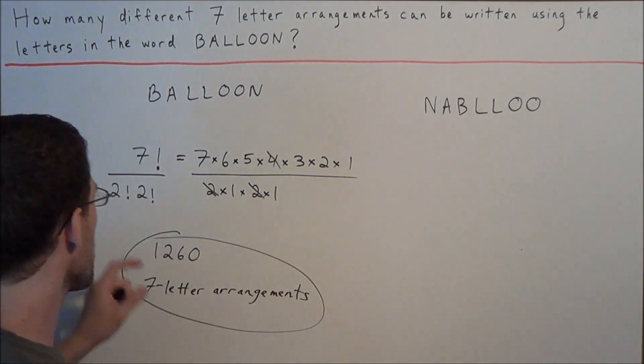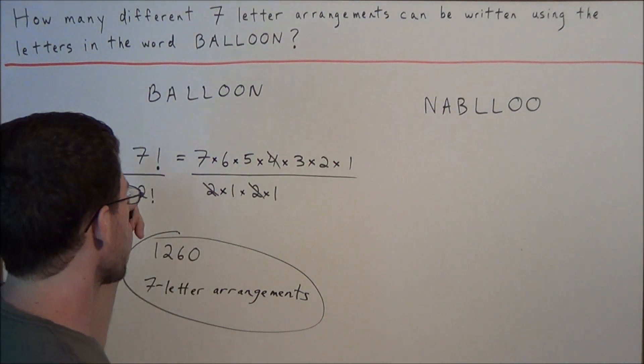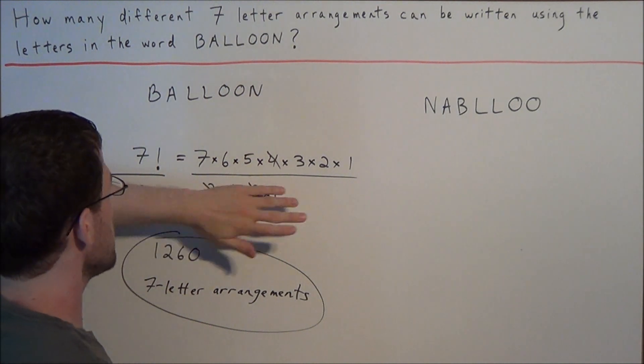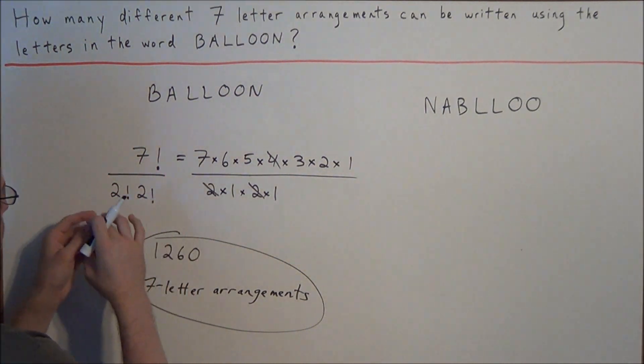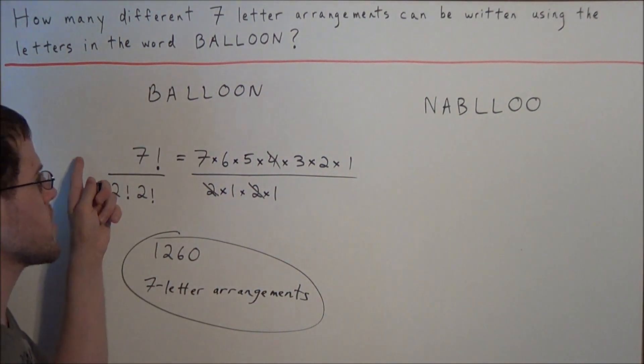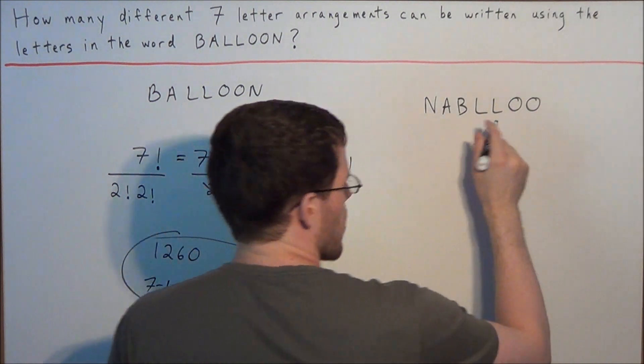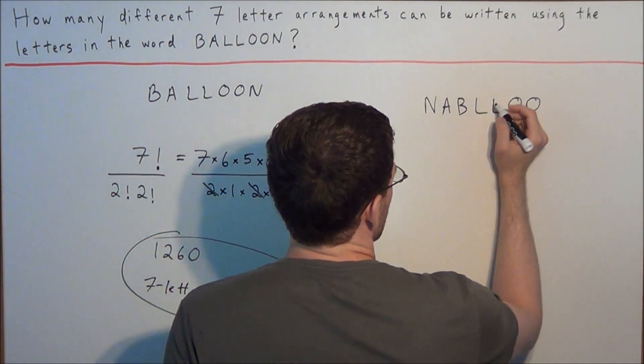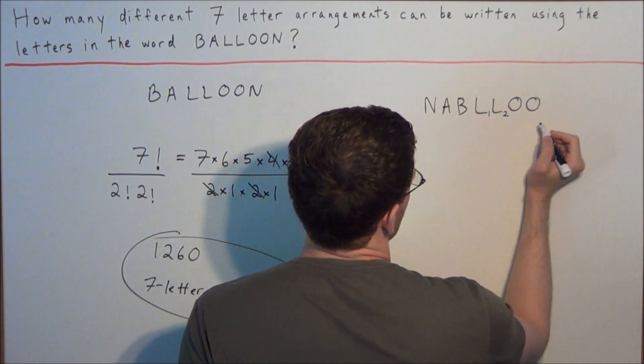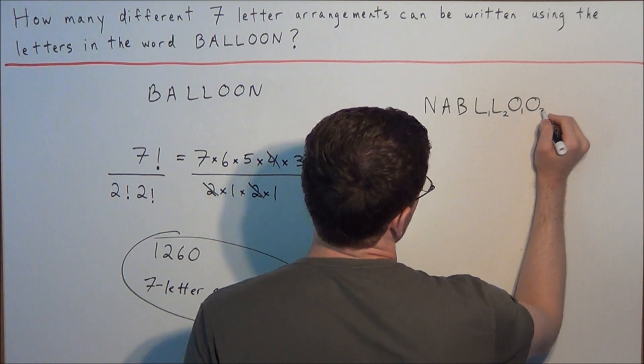But now why we needed to divide, let's explore this now. Now, if we were only going to use seven factorial to count this problem, the reason why we don't want to just use seven factorial is because this would consider all of these letters to be different. So that means if we want to consider them all to be different, let's distinguish these two L's. We'll call this one L-1 and we'll call this one L-2. We'll call the first O O-1 and we'll call the second O O-2.